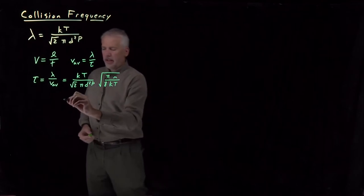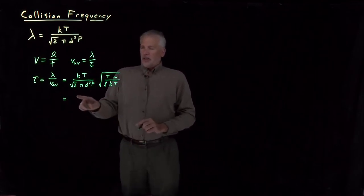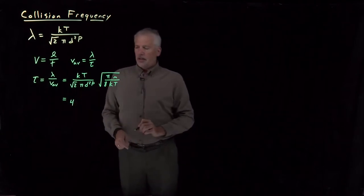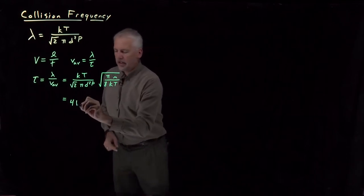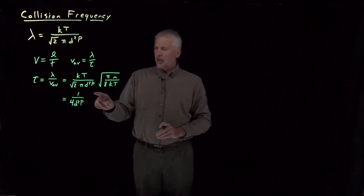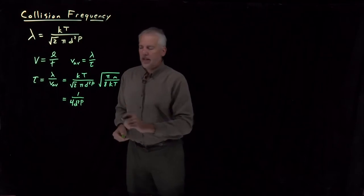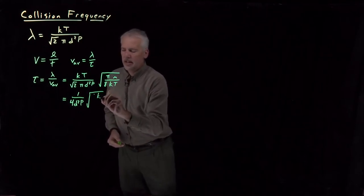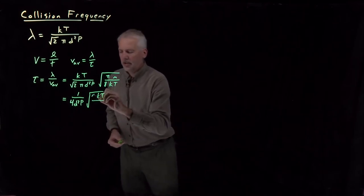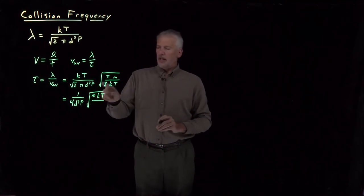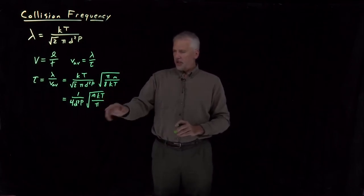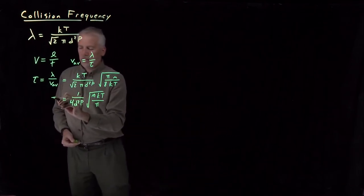Simplifying the expression: the square root of 2 and the square root of 8 in the denominator combine to give the square root of 16, which is 4 in the denominator. I also have d squared and P in the denominator. Inside the square root, kT divided by the square root of kT leaves kT in the numerator. The square root of m is in the numerator, and the pi terms leave pi in the denominator of the square root. That gives the average time between collisions.